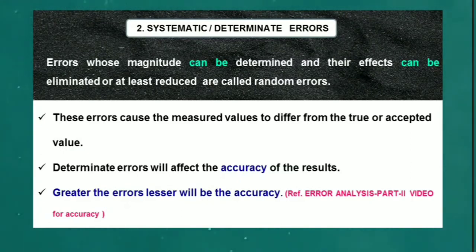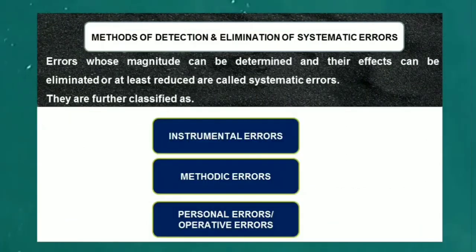Now move on to the methods of detection and elimination of systematic errors. As I said in the previous slide, errors whose magnitude can be determined and their effects can be eliminated or at least reduced are called systematic errors. They are further classified as instrumental errors, methodic errors, and personal or operative errors.